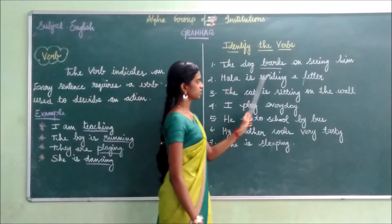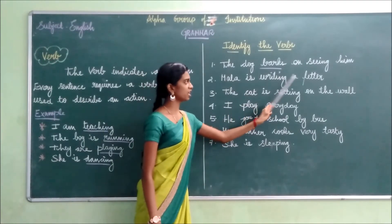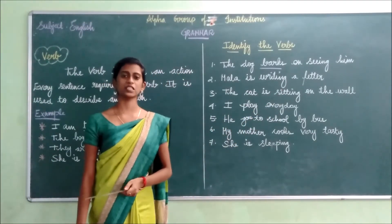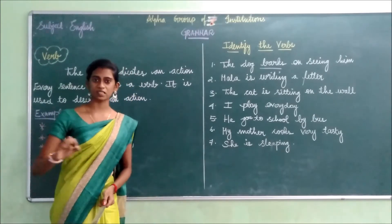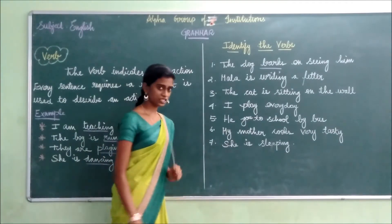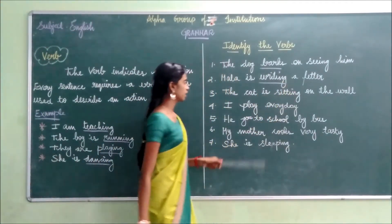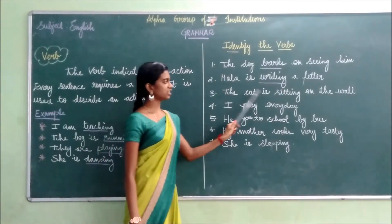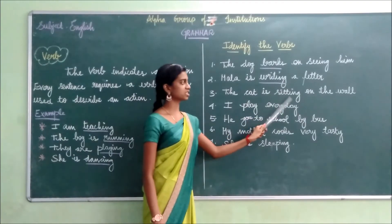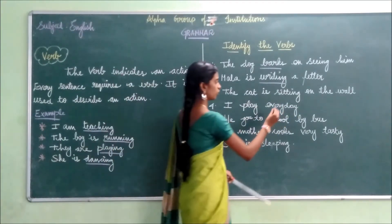Second one: Mala is writing a letter. What is Mala doing? Mala is writing — she is writing a letter. So writing indicates an action, it is known as the verb. The third one: The cat is sitting on the wall. In the sentence, sitting is the verb.